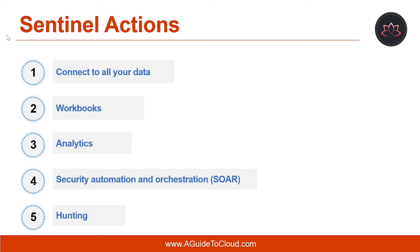The key elements to configure and utilize Sentinel are: first, connect to all your data — to onboard Azure Sentinel, you first need to connect to your security sources. Second is workbooks — after connecting your data sources, you can monitor the data using Azure Sentinel integration with Azure Monitor workbooks. Third is analytics — Azure Sentinel uses analytics to correlate alerts into incidents, which are groups of related alerts that create an actionable possible threat you can investigate and resolve. Fourth is security automation and orchestration, or SOAR — you can automate common tasks and simplify security orchestration with playbooks that integrate with Azure services and your existing tools.